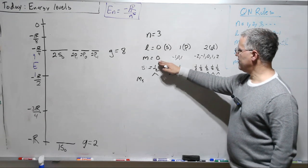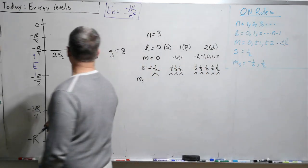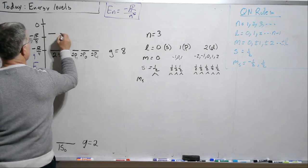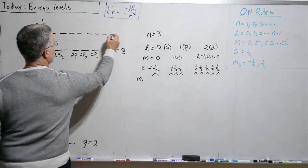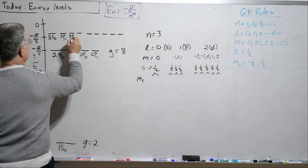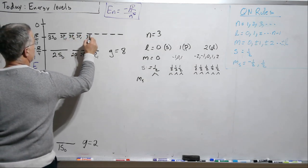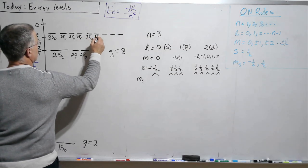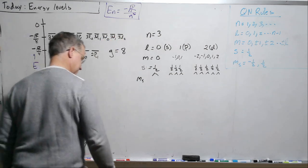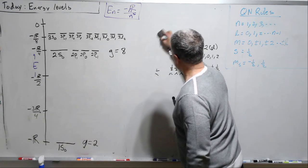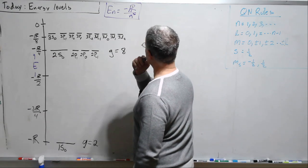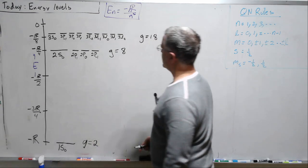All right, how many are there? One of them are S, three Ps, and five Ds. And where are they? They are at one-ninth. What's the degeneracy here? Eighteen.